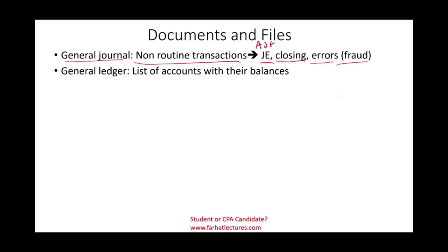The general ledger is a list of all the accounts with their balances — for example, accounts receivable, accounts payable, inventory, and sales. Those are the major accounts listed with their balances.